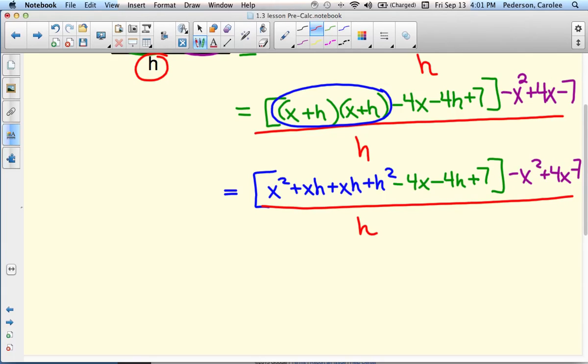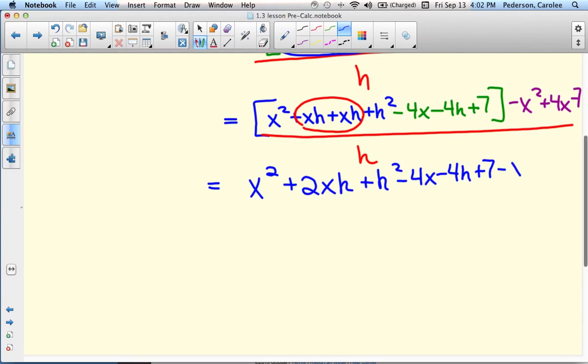Let's go inside that bracket one more time and combine some terms. These two combine to xh plus xh is 2xh. So I have that x squared in front, 2xh, then I have that h squared, minus 4x, minus 4h, plus 7. And then I have these purple down here: minus x squared, plus 4x, minus 7, all over h.